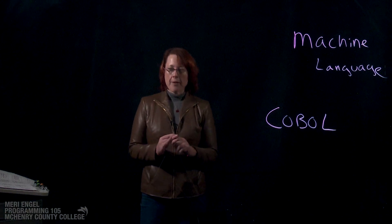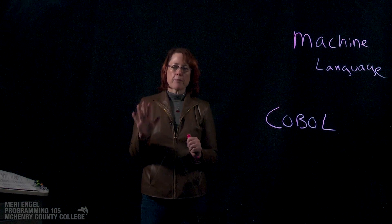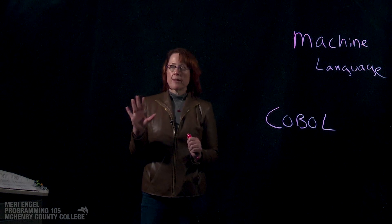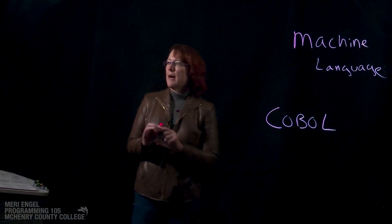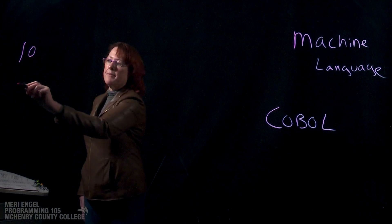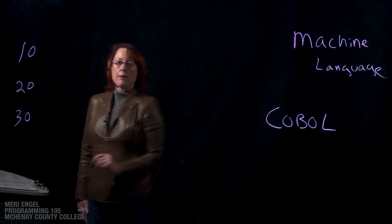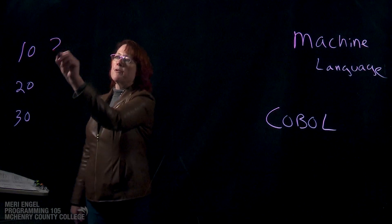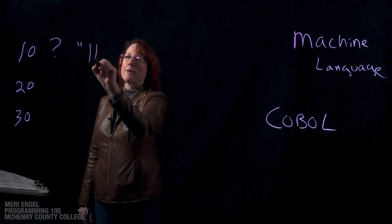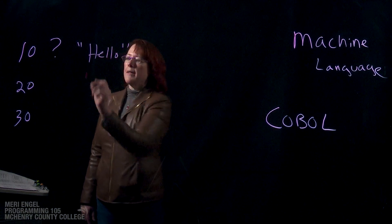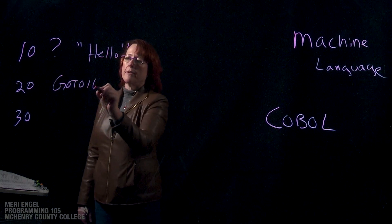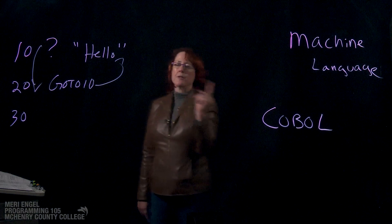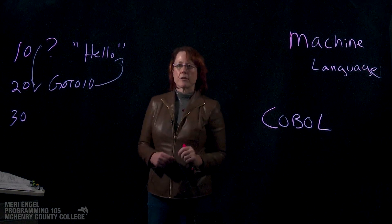When programming first started, computers were very expensive and programmers were very cheap. When I learned BASIC back in junior high, we were typically using line numbers and go-to statements to control the flow of logic. You'd write a print statement and a go-to, and it would loop endlessly, printing hello over and over on the screen until somebody physically interrupted it.